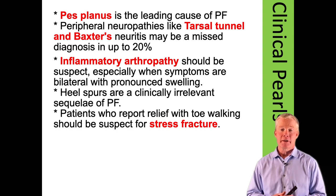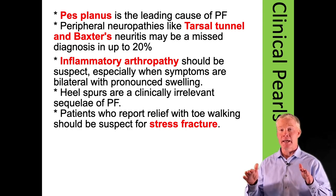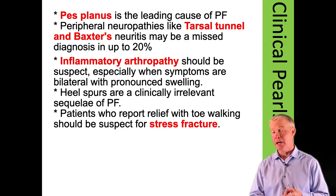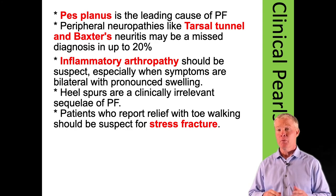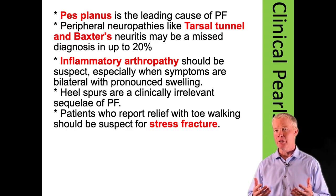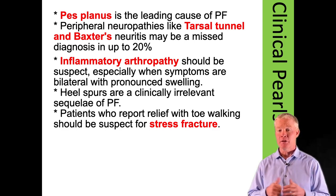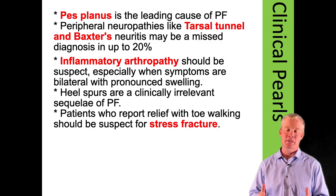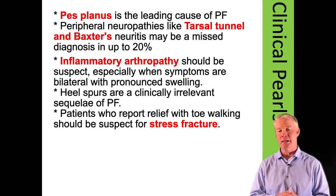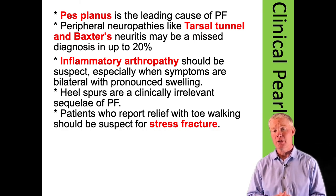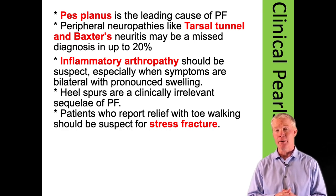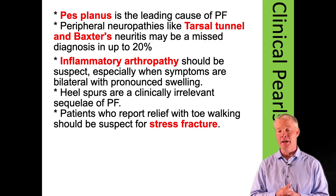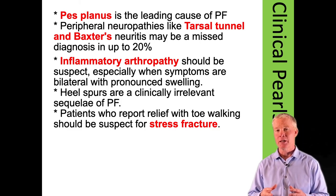The clinical pearls for plantar fasciitis: recognize that pes planus and hyperpronation are the leading causes. Make sure you've ruled out other problems like tarsal tunnel syndrome, Baxter's neuropathy, and heel pad syndrome. If it's bilateral and the patient may have signs of an inflammatory arthropathy, rule those out. Heel spurs are a symptom, not the cause — treat the cause, not the symptom. Rule out stress fractures by seeing what happens when the patient goes up on their toes: plantar fasciitis hurts because of the windlass effect; heel pad syndrome and calcaneal fractures feel better.